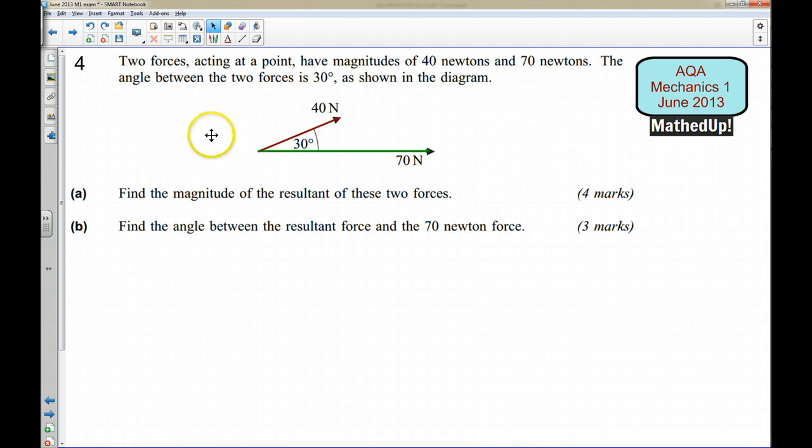In this question we're given two forces acting at a point that have magnitudes of 40 newtons and 70 newtons, and we've got an angle of 30 degrees between them.